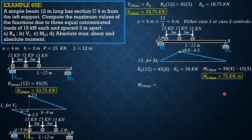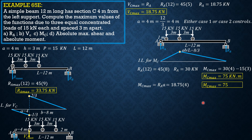For case 2, the leftmost load is over C. Since either case controls, MC max = RA × A = RA × 4. We already computed RA for this loading position as 18.75 kilonewtons, so MC max = 18.75 × 4 = 75 kilonewton-meters — the same value.